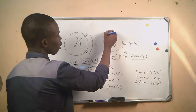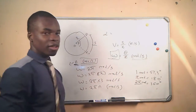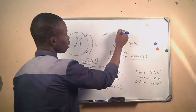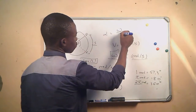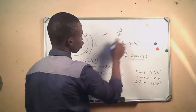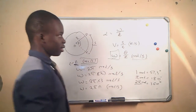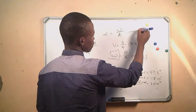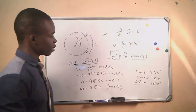We also have angular acceleration, represented by alpha (α). Acceleration is the rate of change of velocity, so angular acceleration is the rate of change of angular velocity. Its SI unit is radians per second squared.